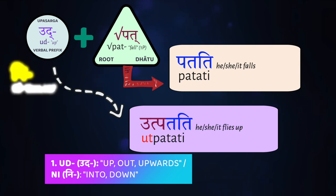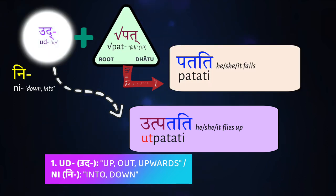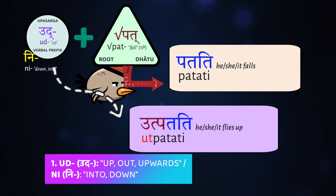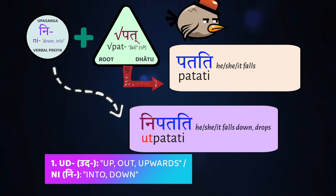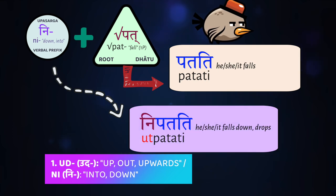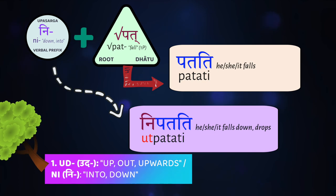The opposite of ud is the prefix ni, which means down, downwards, low. So if you take the verb patati, 'to fly or fall,' and add ud, ut-patati means 'to fly up' — kāgaḥ ut-patati, 'the bird flies up.' But if you add ni to pat, you get ni-patati, 'he/she/it falls down.' Vṛkṣaḥ ni-patati — 'the tree falls down.'